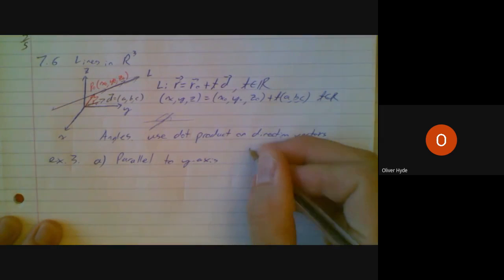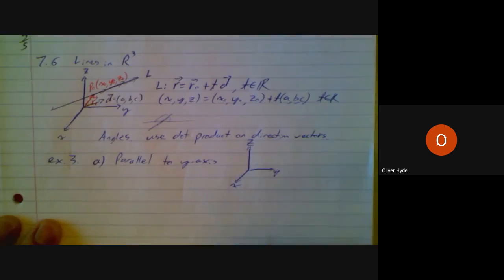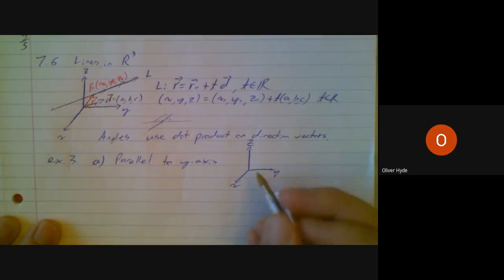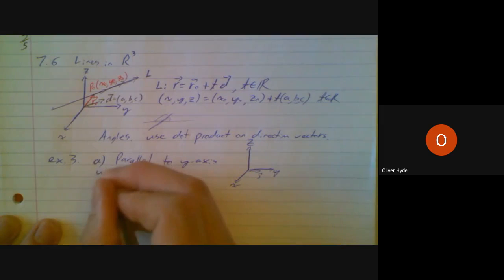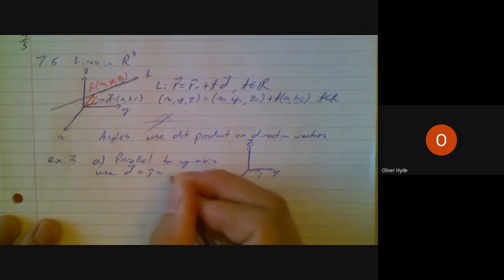Let's just do a little sketch here. Positive x, positive y, positive z. Let's pretend I'm going through the point 1, 2, 3, and I am parallel to the y-axis. I'll just use a direction vector in the y-axis as a direction vector for the line. I'm going to use a direction vector for the line as j-hat, also known as 0, 1, 0.